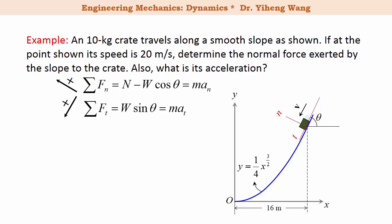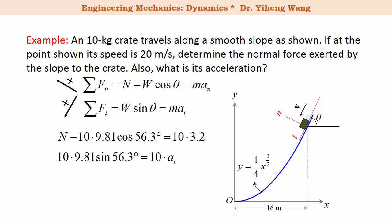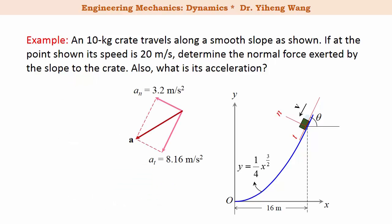In our two equations of motion, we know the weight, θ, mass, and normal acceleration a_n. Substituting these in, we have only two unknowns — N (the normal force) and a_t (the tangential acceleration) — and two equations, so we can solve for both. The normal force is 86.4 N, which is one of the answers we were looking for. Knowing the tangential acceleration, we can fully characterize the acceleration vector. The magnitude of acceleration is determined to be 8.77 m/s², which is the second answer.